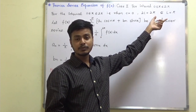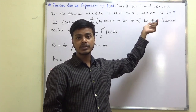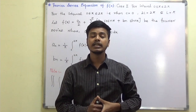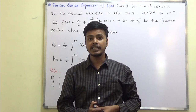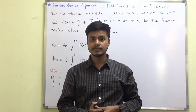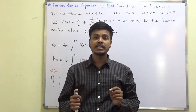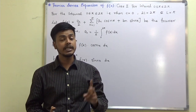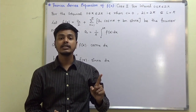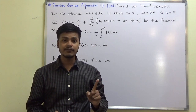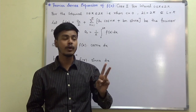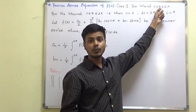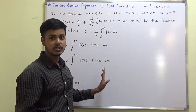If the interval is 0 to 2π, then what happens to the Fourier series and what should be a₀, aₙ, bₙ in this case? The very important thing in the entire unit is only two things: one is the function should be periodic, and the second one is the interval. Depending on the interval, the formulas get changed.